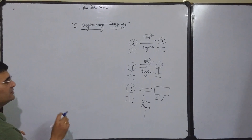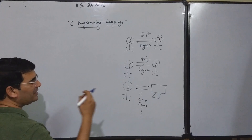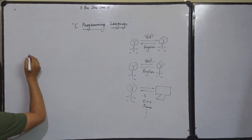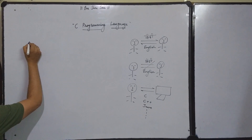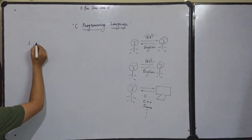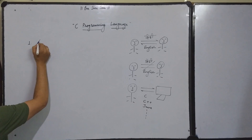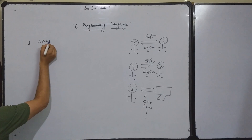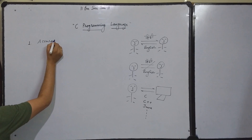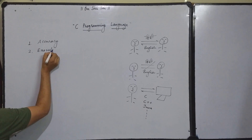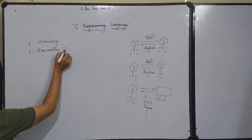There are many reasons why we use computers, but the two most important reasons are: first is accuracy, and the second is execution time.